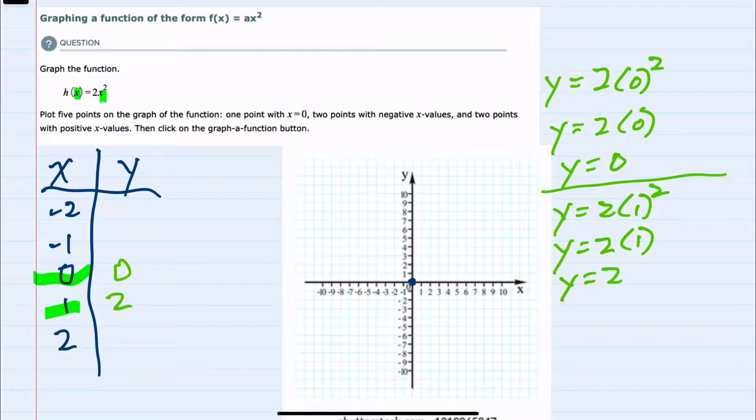Our y value here is 2, so we have the coordinate 1, 2. And then moving to the next x value, we'll continue down and plug in a positive 2.